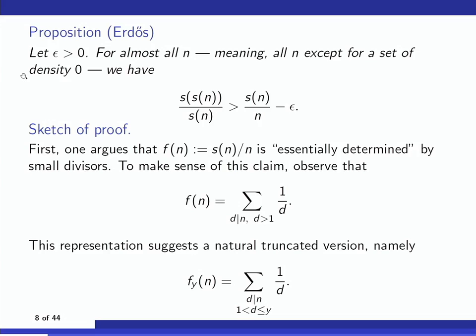The key insight is that s(n)/n, which I'll denote F(n), is essentially determined by small divisors. It's an elementary exercise to rewrite s(n)/n as a reciprocal sum: it's the sum over divisors d of n greater than 1 of 1/d. Once you have this, there's a natural way to define a related function sensitive only to small divisors: I take the same sum but restrict d to be at most y. I'll call that the y-truncated abundancy.